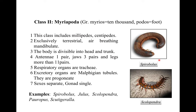The second class is Myriapoda. Myrios means ten thousand, podos means foot. They are exclusively terrestrial, air-breathing, mandibulate arthropods. Their body is worm-like, made up of a head and an elongated trunk with many similar leg-bearing segments. They have one pair of antennae, three pairs of jaws, and more than 11 pairs of legs. Respiration is by tracheae; spiracles are arranged segmentally.